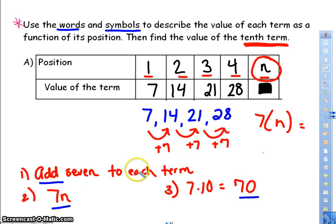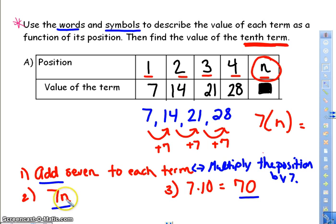If you don't want to put, add 7 to each term, you can also say multiply the position by 7, and that would give you the same thing. These represent the same thing. Now, I don't want to take n plus 7, because that doesn't make sense. This is n is 1. If I take 7 plus 1, you get 8. That's not 7. 7 plus 2 is 9. That's not 14. So I'm not adding 7 to the position. I'm adding 7 to the term before it. So make sure you're paying attention to that as well.